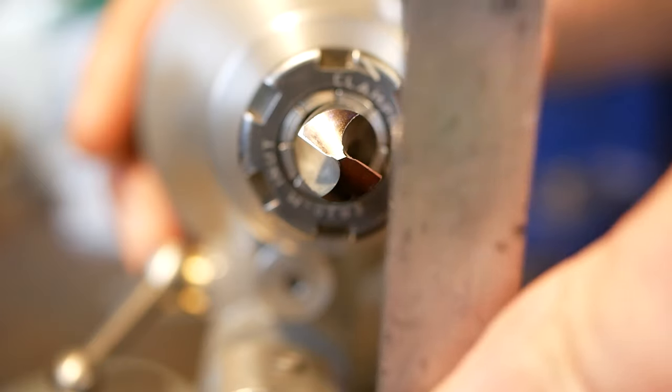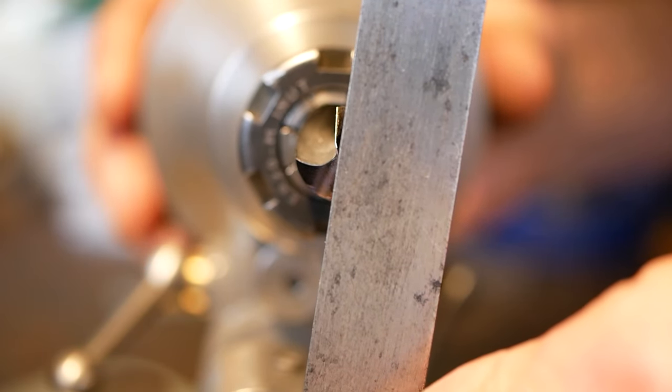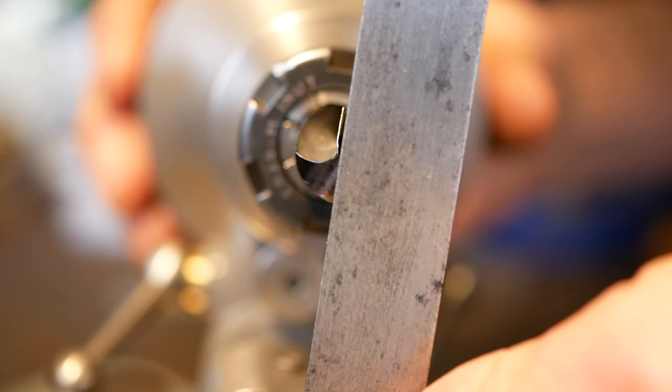To start with, the flutes of the drill bit must be parallel to the axis of rotation. This can be achieved using a tri-square.